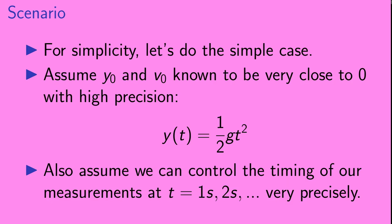But here, for simplicity, let's do the simple case. We're going to assume that y naught and v naught are known to be very close to 0 with high precision. So we're going to use the function y of t equals 1 half g t squared. We're also going to assume that we can control the timing of our measurements at t equals 1 second, t equals 2 seconds, etc., very precisely. So we know very precisely when our measurements of y of t occurred.